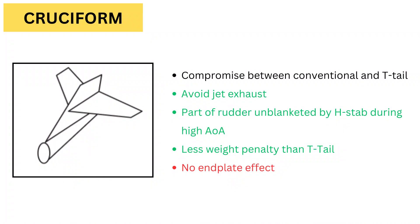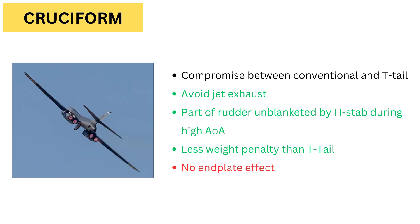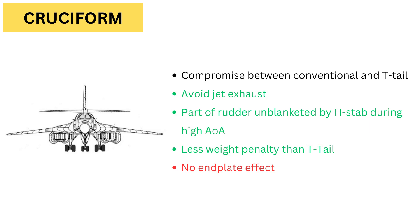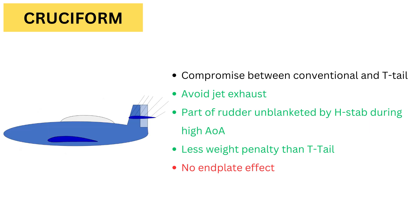Cruciform Tail: This is a compromise between the conventional and T-tail type. The horizontal tail is lifted up from its conventional position to avoid proximity to jet exhaust. This can be seen on the B-1B Lancer. Placing the horizontal tail here also exposes the lower part of the rudder to undisturbed air during high angles of attack conditions and spins, which means the lower part of the rudder will have some control over the aircraft in these conditions. The weight penalty is lesser when compared to T-tails, but there is no end-plate effect.